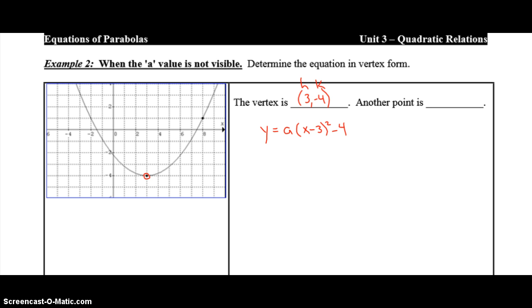In order to figure out the a, what you need is some other point other than the vertex. So there will always be another point marked for you. So here's one at 8, 1. So another point is at 8, 1. What you're going to do is you're going to substitute the 8 in for x and the y in for 1, and then solve for a.